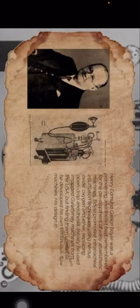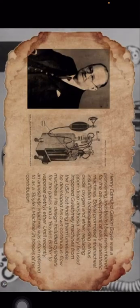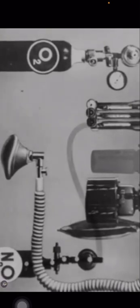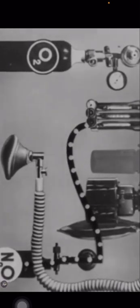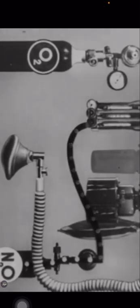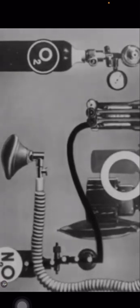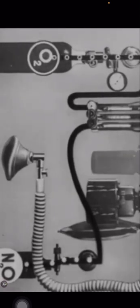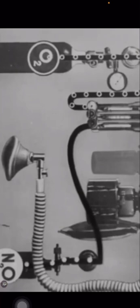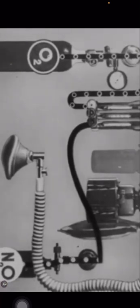The original concept for the continuous flow anesthesia machines was proposed by Boyle's anesthesia machine, invented by British anesthetist Henry Boyle at a hospital in London in 1917. Although similar machines had been used prior to this time, the equipment had been heavy and bulky.